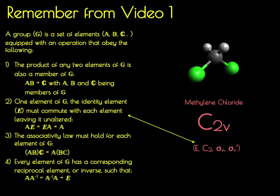The other three rules aren't obvious. In order to determine whether this actually obeys the rules of a group, we have to go through and construct something called a group multiplication table. This involves combining elements together to see what the product of any two elements is, so we have to learn how to multiply these symmetry elements together.